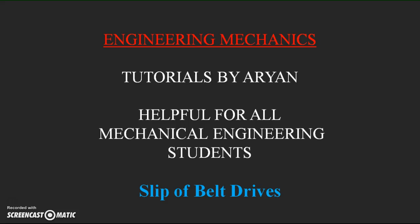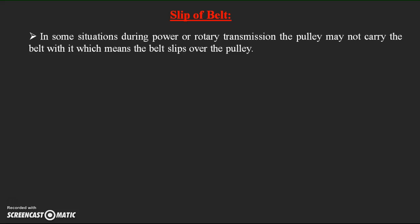So what exactly is meant by slip and when do we face slip? Slip means that during power transmission or rotary transmission, the pulley may not carry the belt with it — the belt slips over the pulley. Whenever we try to transmit power with a belt drive system, the rotation of the pulley should cause transmission of rotary motion through the belt to the next pulley, but in some cases the belt may not be moving with the pulley, causing a reduction in the velocity of the belt.